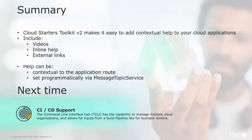To summarize: this is the Cloud Starter Toolkit version two, which adds a capability to easily add contextual help to your cloud applications. You can add videos, inline help, and external links, and make that help contextual to the page route or programmatically set via the message topic service.